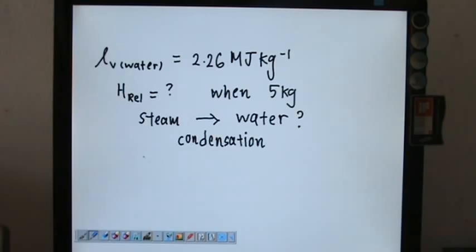We can use this equation: heat released equals ML. M is 5 kg of steam changing to water, times L of the water, Lv for vaporization.